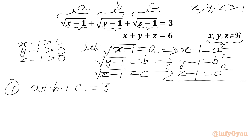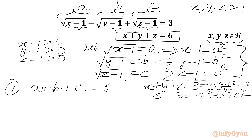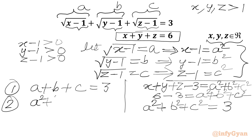Now we are going to calculate the addition of these three equations. We can write x plus y plus z minus 1 minus 1 minus 1 equals a squared plus b squared plus c squared. Now x plus y plus z equals 6, so 6 minus 3 equals a squared plus b squared plus c squared, which gives a squared plus b squared plus c squared equals 3. This is equation number 2.